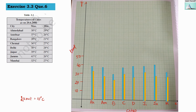This is how the bar graph looks when both maximum and minimum temperatures are plotted. The blue bars represent the maximum temperature of each city, and the orange bars represent the minimum temperature of each city.